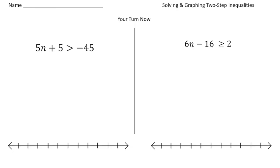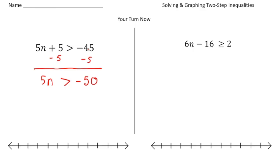Welcome back. Let's see how you did. The first practice problem: 5 times the number plus 5 is greater than negative 45. Step one, subtract 5 from both sides, and that gives us 5n is greater than negative 50 — careful with your negatives, since negative 45 minus 5 gives you negative 50. Then divide both sides by 5, and that ends up with n greater than negative 10.